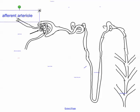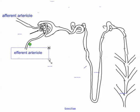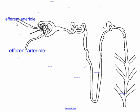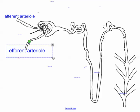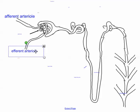You have an arteriole that comes in here and then it comes back out. The one going in we call the afferent arteriole, and then when it's coming back out, we call it the efferent arteriole. Just remember that the letter A comes before the letter E — afferent to efferent. The efferent side is thinner, so the blood coming through eventually gets squeezed through a smaller tube, which creates very high pressure inside.